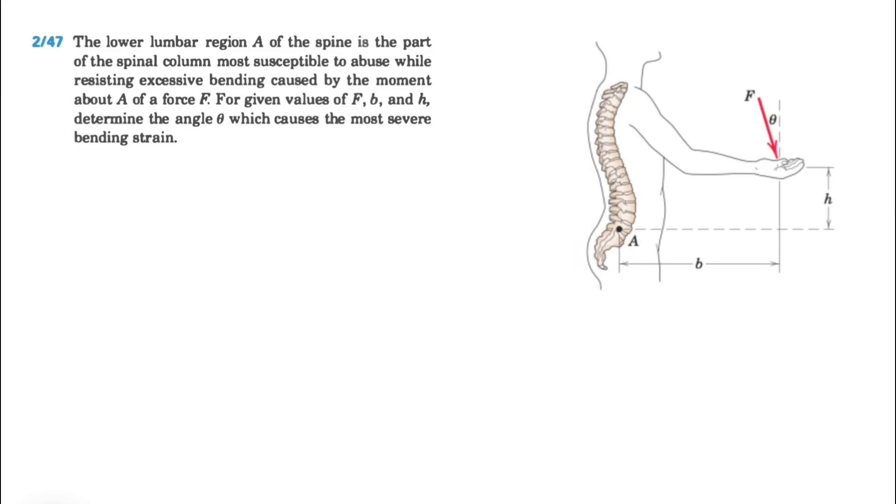Alright guys, welcome back. We're going to be solving another question from the second chapter of a biomechanics textbook, question 47. In this one, the lower lumbar region A of the spine is the part of the spinal column most susceptible to abuse.